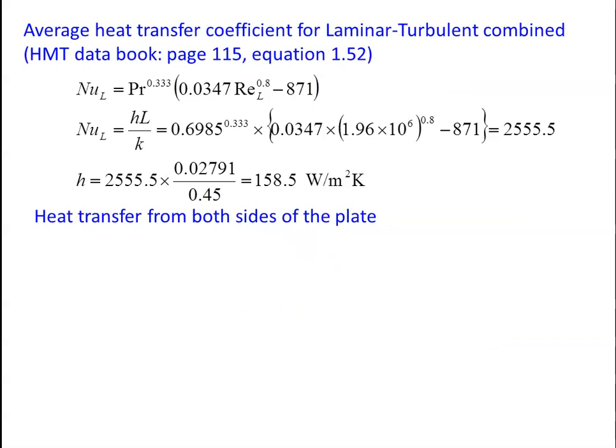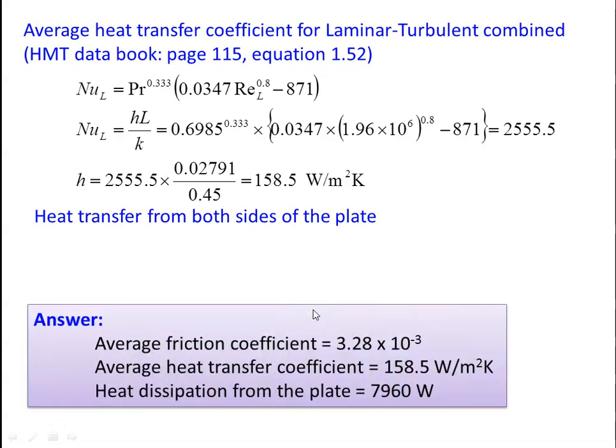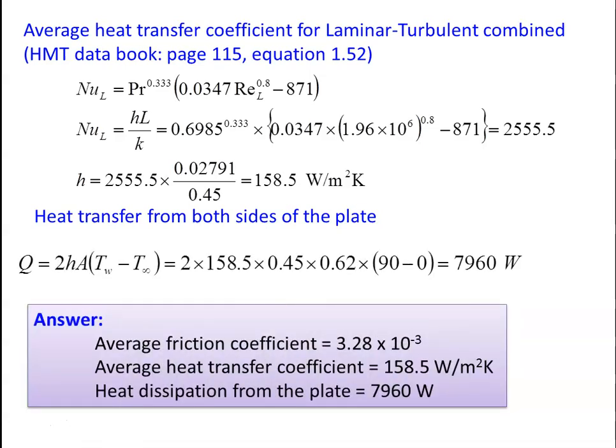Average heat transfer coefficient for laminar-turbulent combined flow, page 115, equation 1.52: Nu = Pr⁰·³³³ × (0.0347 × Re⁰·⁸ − 871) = 0.6985⁰·³³³ × (0.0347 × (1.96 × 10⁶)⁰·⁸ − 871) = 2555.5. Average h = 158.5 W/m²·K. Heat transfer from both sides: Q = 2 × h × A × ΔT = 2 × 158.5 × (0.45 × 0.62) × (90 − 0) = 7960 W.